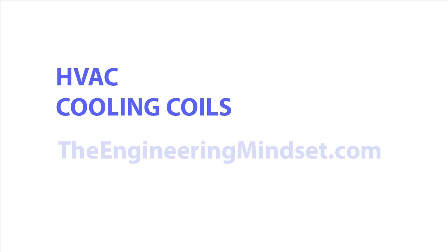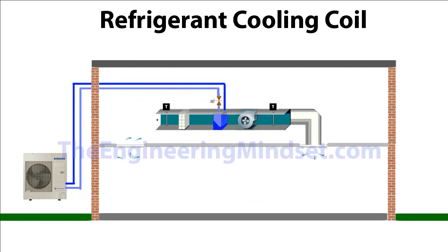Cooling coils are a really common component in HVAC systems and they usually come in two forms. The first one being refrigerant-based — they are fed refrigerant directly from an AC unit, as you can see here, so we've got the AC unit outside and this is just piped straight to the DX unit within the AHU or the fan coil unit.